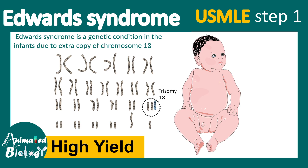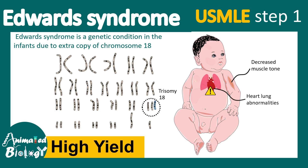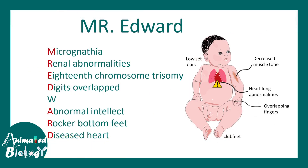Edward syndrome is also known as trisomy 18. These babies have decreased muscle tone, problems in the heart and lungs, overlapping fingers, low-set ears, clubbed feet, and many other problems.